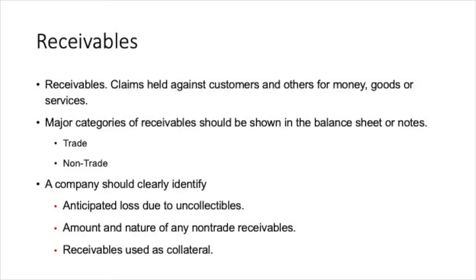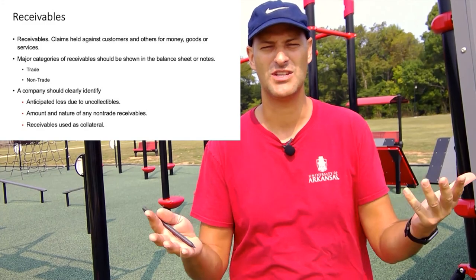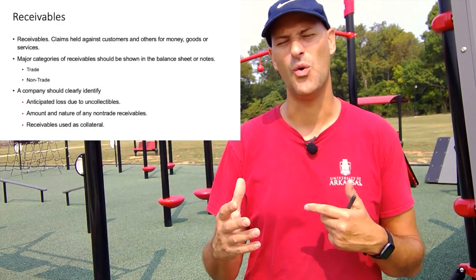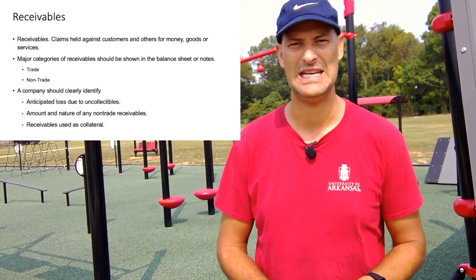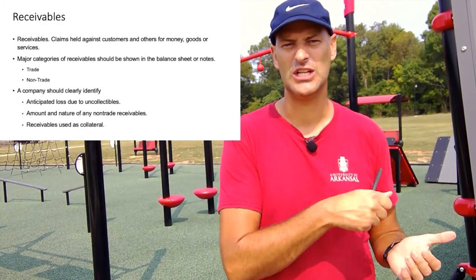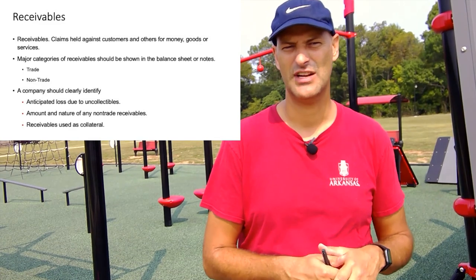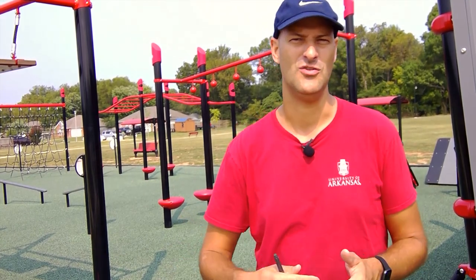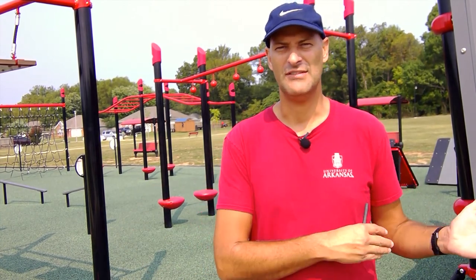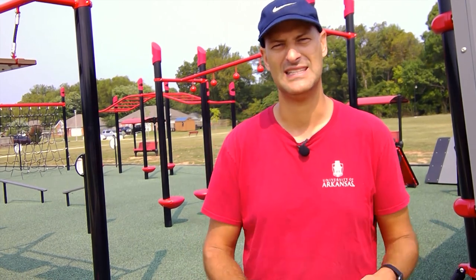Moving on to receivables — our next current asset. Receivables are claims held against customers and others for monies, goods, and services. The two main classifications are trade and non-trade. Companies must clearly identify their allowance for doubtful accounts — how much of those receivables they expect not to receive — along with the amount and nature of any non-trade receivables. If receivables are being used as collateral for a loan, which is very common for operational lines of credit, that must also be disclosed.